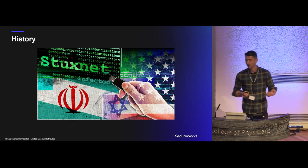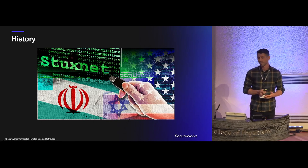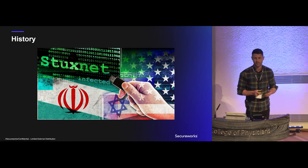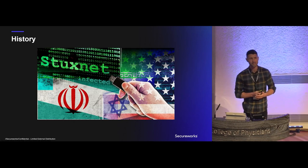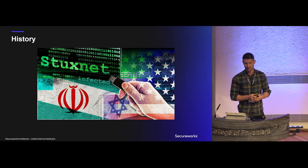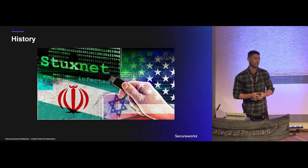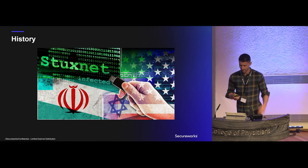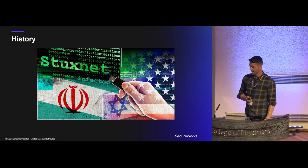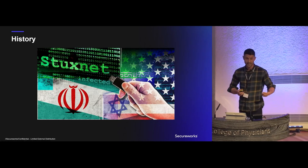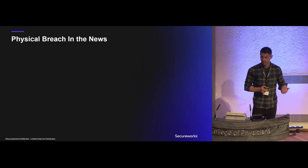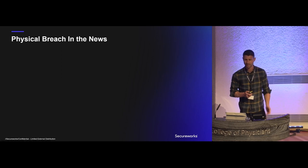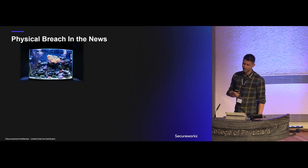Who were the culprits? It's thought that it was the United States and Israel, because they believed Iran was using the nuclear plant to develop an atomic bomb, while Iran claimed it was just for generating power. That's probably the most well-known story where the impact was the greatest. I also started looking for other physical breach stories in the news — they're not actually that easy to find, but here are a few.